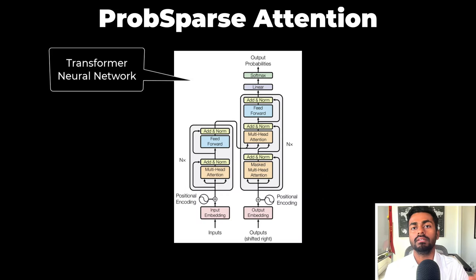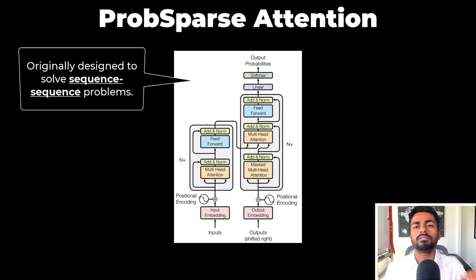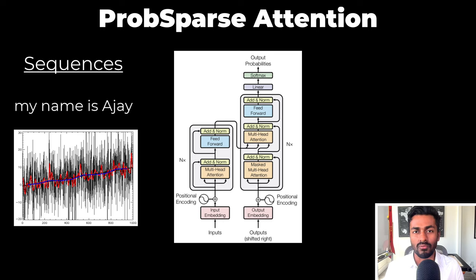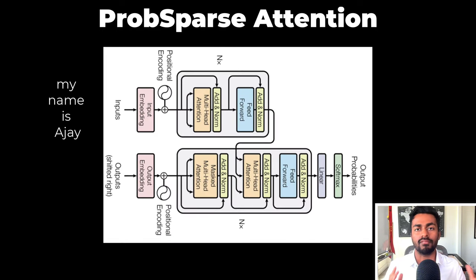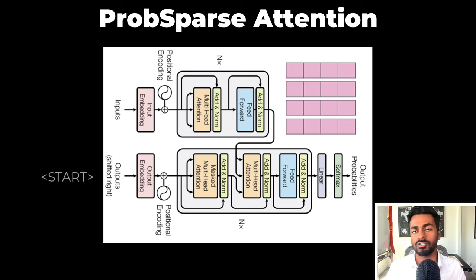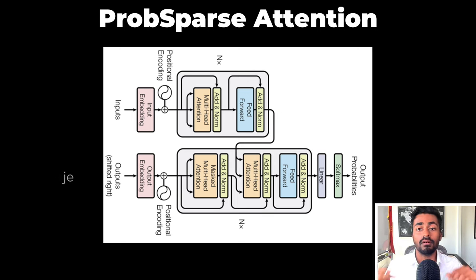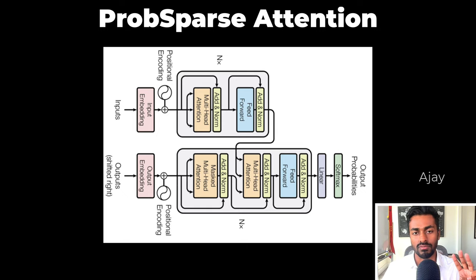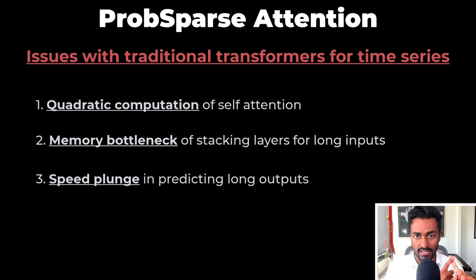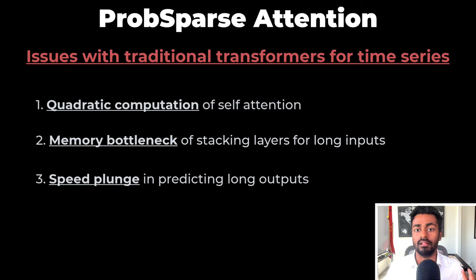This is the transformer neural network. It was originally designed to solve sequence-to-sequence problems. Sequence is data with some defined ordering, like the words in a sentence or like time series data. And you can see here the working of a transformer to translate from English to French. However, for long time series data, this architecture has three main issues: the quadratic computation of self-attention, the memory bottleneck in stacking layers for long inputs, and the speed plunge in predicting long outputs.